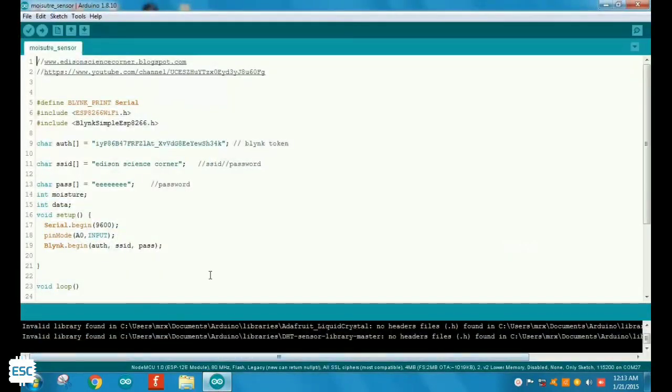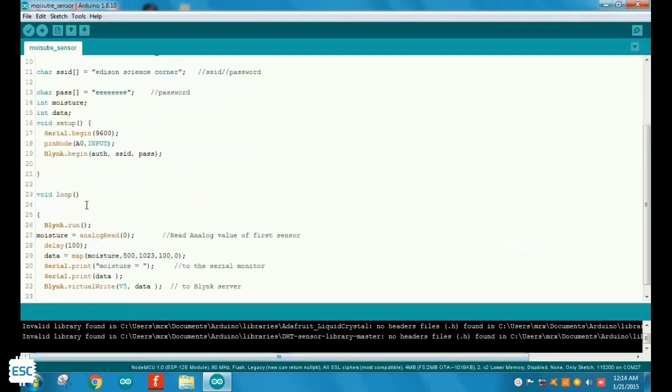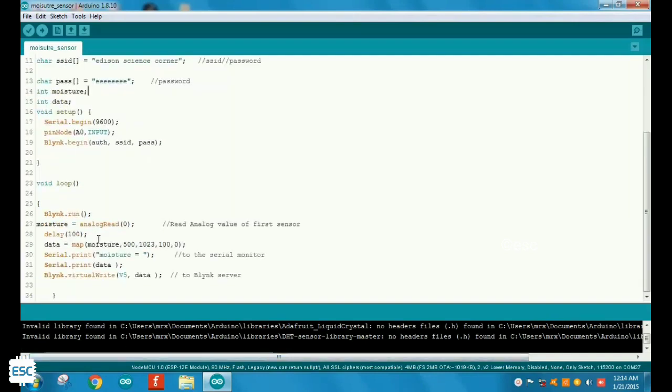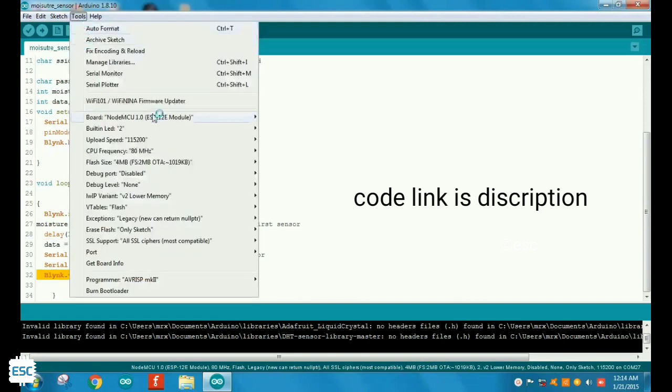Now let's upload code to our ESP. The code is also very simple. First I included the Blink library, then ESP library, then we need to include the Blink token and Wi-Fi credentials. In the setup section I defined the pins, then I used Blink virtual write function to send the data to the server. That's all about programming. The rest is in the app.